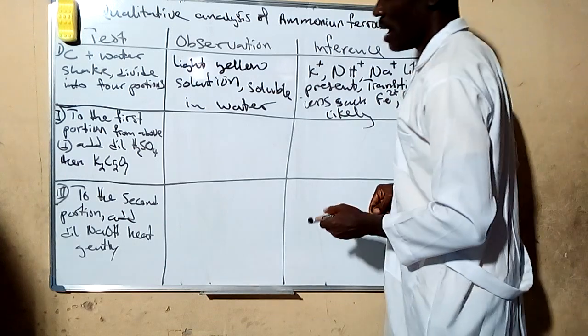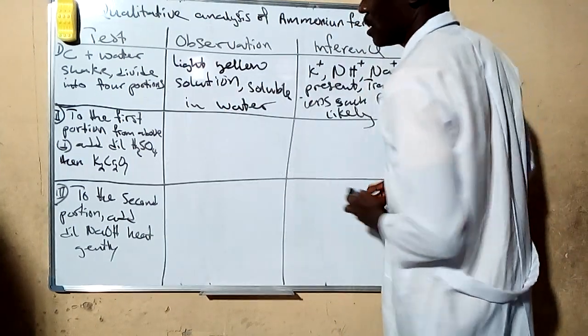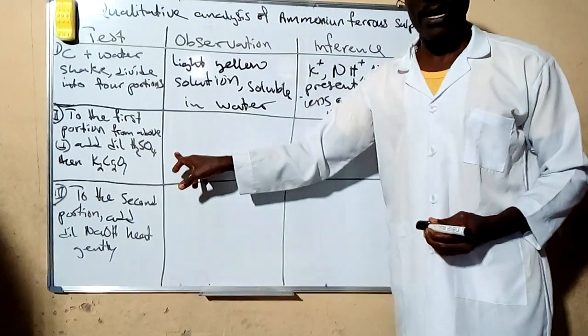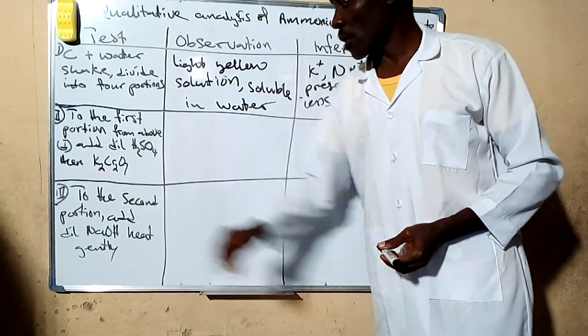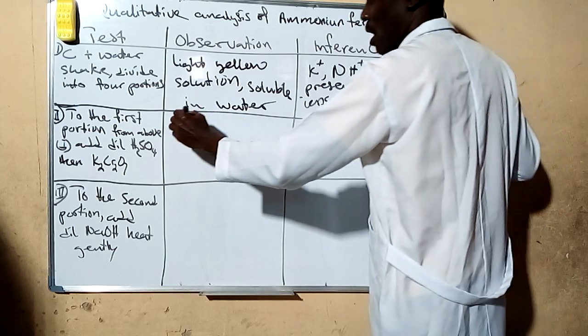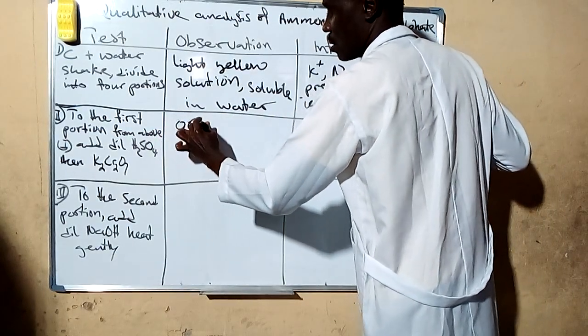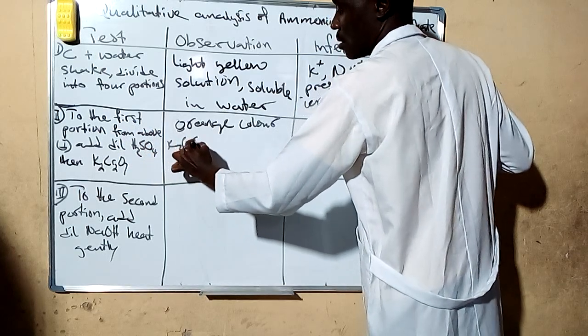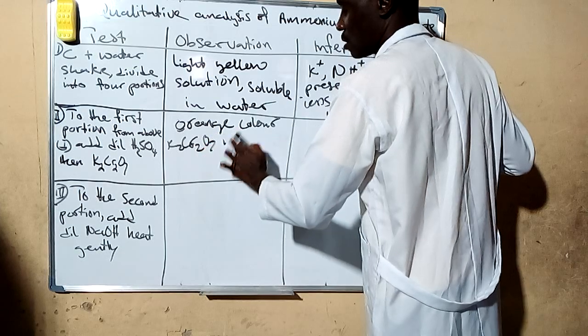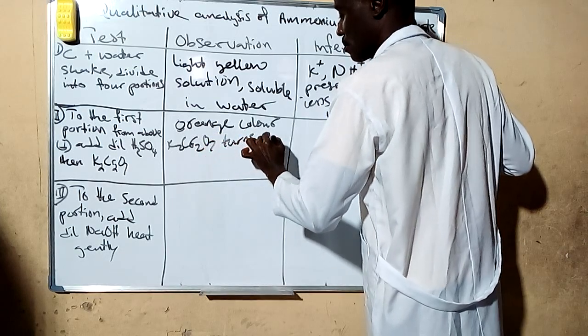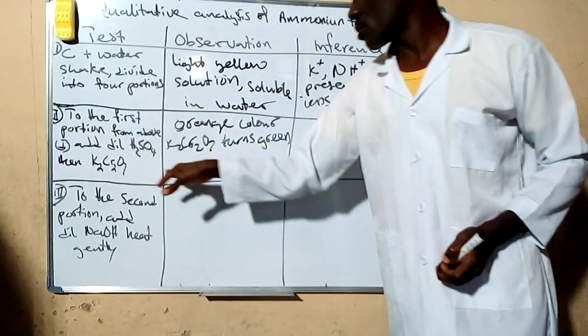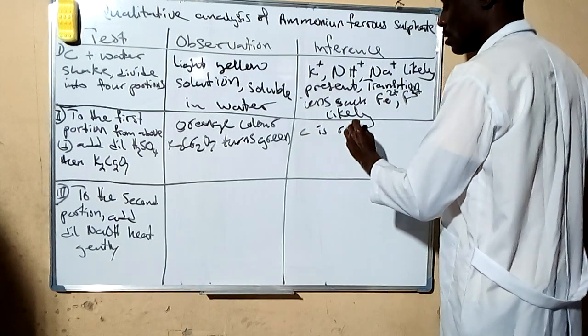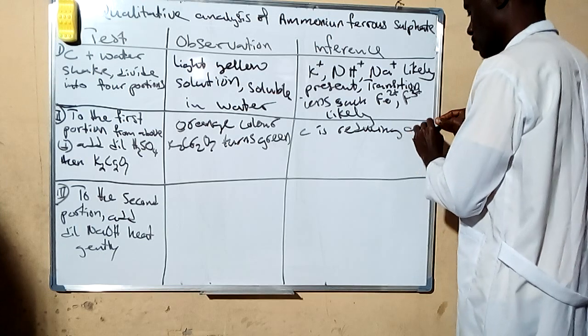Now the next one, we have the first portion from the solution. We add dilute hydrochloric and sulfuric acid, then you add potassium chromate. What you observe there is the orange color of the potassium chromate turns green.